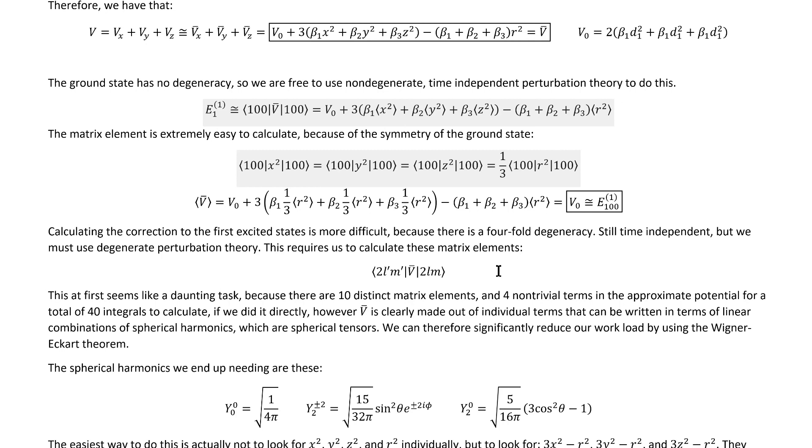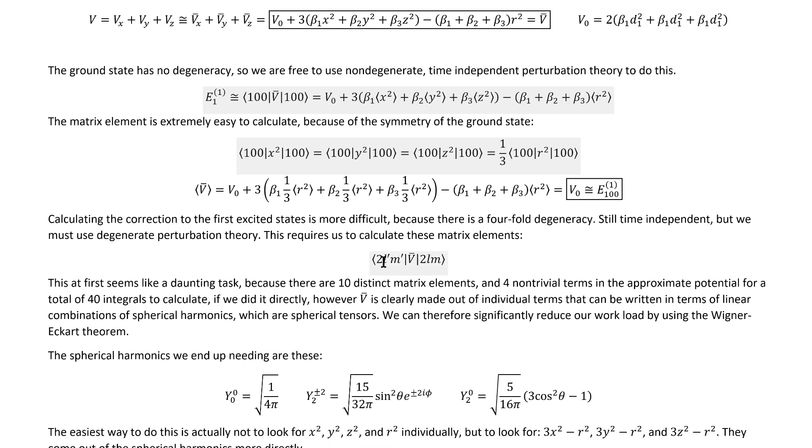As per the prescription of degenerate first-order perturbation theory, the matrix that we need to diagonalize to get the energy corrections is this one. At first sight, calculating this matrix here seems like a daunting task, because there are 10 distinct matrix elements and four non-trivial terms in the approximate potential for a total of something like 40 multivariable integrals to calculate.